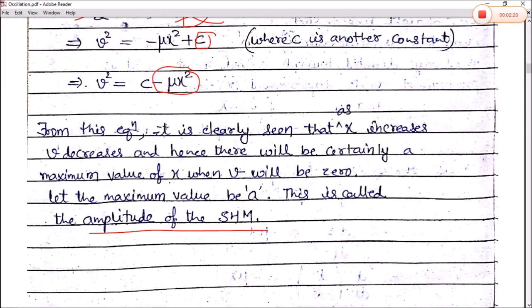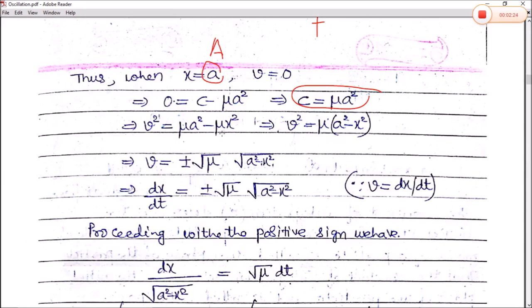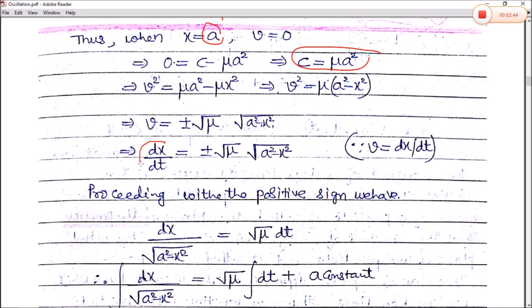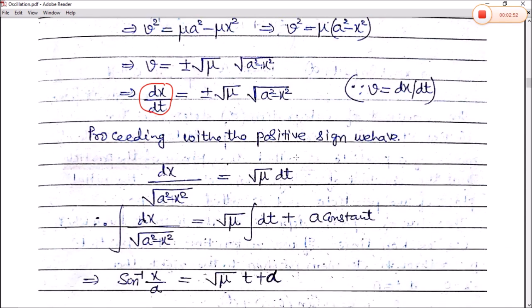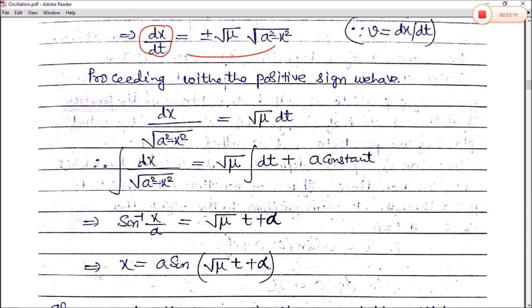Since v equals dx/dt, we have dx/dt equals plus or minus √μ · √(a² minus x²). Proceeding with the positive sign and integrating both sides: dx / √(a² minus x²) equals √μ · dt. Using the standard integration formula, the left side gives sin⁻¹(x/a), and integrating the right side gives √μ · t plus α, where α is a constant of integration.